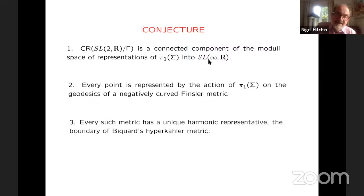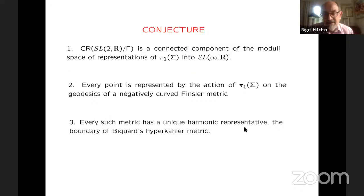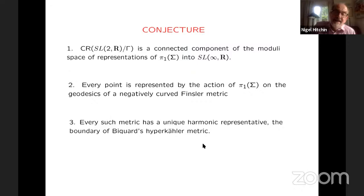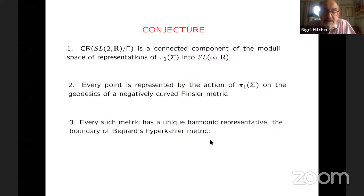What I would also like to say is that actually every point in this component should be represented by the action of π₁ on the geodesics of a negatively curved Finsler metric. So given any negatively curved Finsler metric, we have a representation of π₁ into SL(∞,ℝ), and its equivalence class should lie in this component. On the other hand, Biquard gives us some distinguished Finsler metrics which depend on having a holomorphic structure on the surface. And I would like to think of these as being like harmonic representatives. So given any negatively curved Finsler metric, I would like to think that its holonomy is represented by a rather special Finsler metric — the one which comes from Biquard.